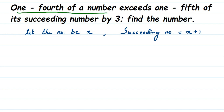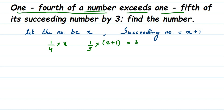Now we're going to frame the equation. 1/4 of a number means 1 by 4 multiplied by X. Exceeds means it is more than 1/5 of the succeeding number. 1/5 of the succeeding number is 1 by 5 of (X plus 1), so I'm going to put (X+1) in a bracket. This is equal to 3.